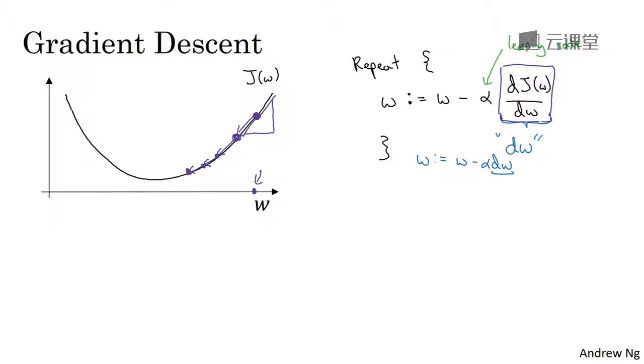As another example, if w was over here, then at this point, the slope here, or dj, dw, will be negative. And so the gradient descent update would subtract alpha times a negative number. And so it would end up slowly increasing w. So you end up, you're making w bigger and bigger with successive iterations of gradient descent.